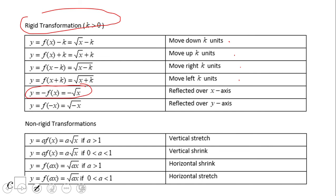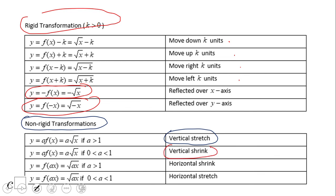So these are the rigid transformations: down, up, right, left. A negative in front will reflect over the x-axis, and reflecting over the y-axis is also possible. All these transformations do not change the shape — we call them rigid. The non-rigid transformations include vertical stretch, when we have a number greater than one in front, and vertical compression, when we have a fraction like one-half. Similarly, there are horizontal stretch and horizontal compression when the number is inside the square root.